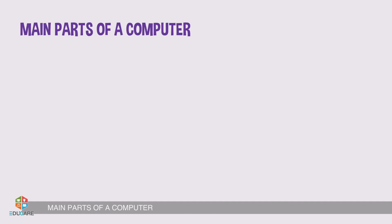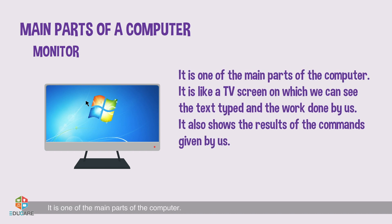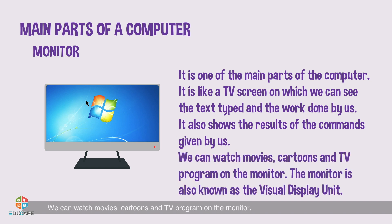Main Parts of a Computer: Monitor. It is one of the main parts of the computer. It is like a TV screen on which we can see the text typed and the work done by us. It also shows the results of the commands given by us. We can watch movies, cartoons, and TV programs on the monitor. The monitor is also known as the Visual Display Unit.